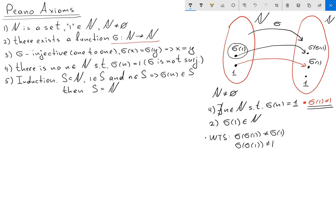There is no pre-image for element 1. But we want to show that sigma of sigma of 1 doesn't equal sigma of 1. Let's prove by contradiction. Assume that sigma sigma of 1 equals sigma of 1.